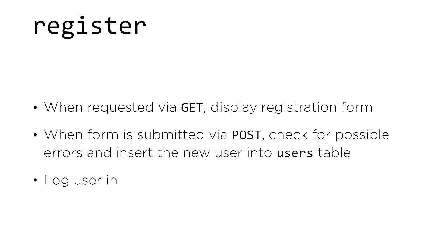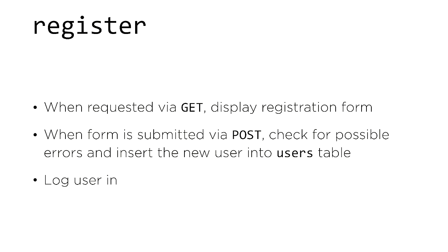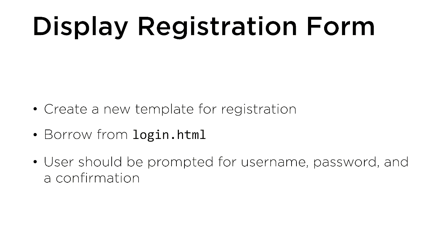The first thing you'll need to do is allow each user to register for your finance application. Your register route should accept two different request methods — GET and POST. If the user accesses the register route via GET, display a form so they can register for a new account. Once the user submits that form via POST, check for possible errors. If there are no errors, insert the new user into the users table and log the user in.